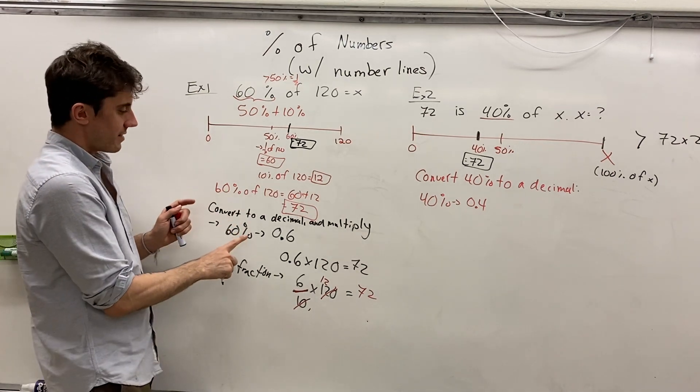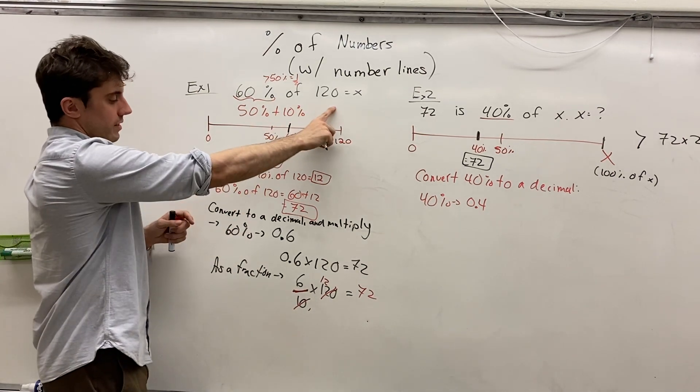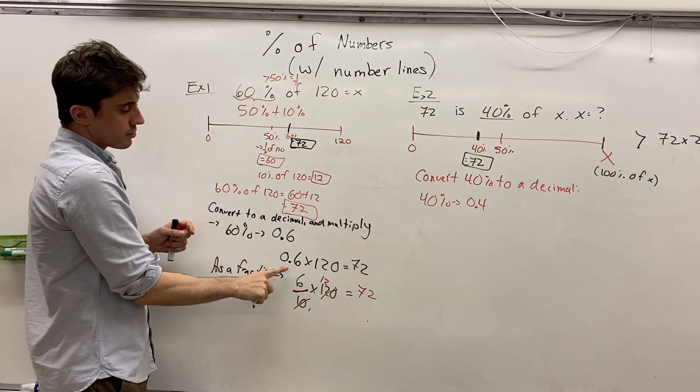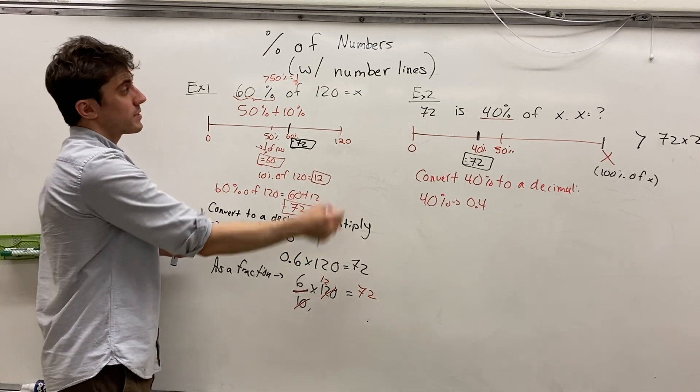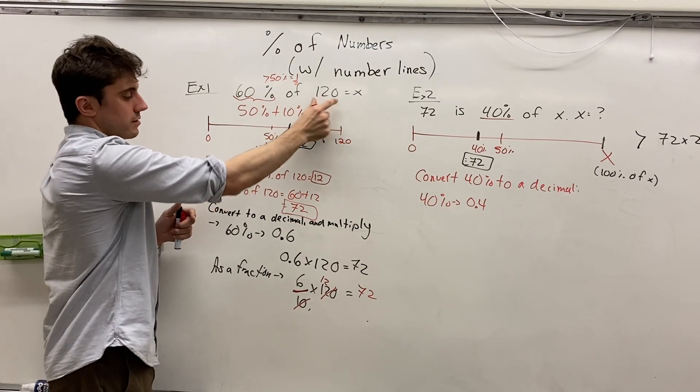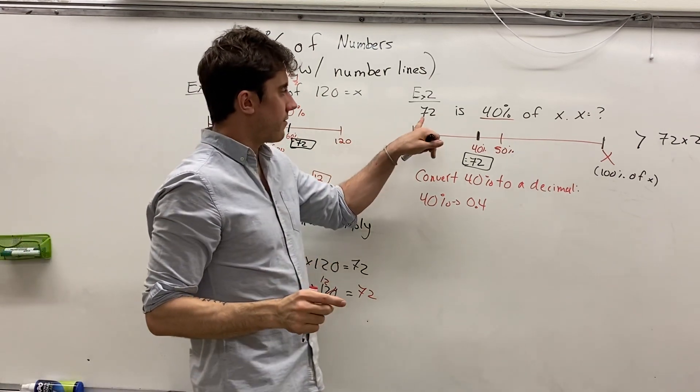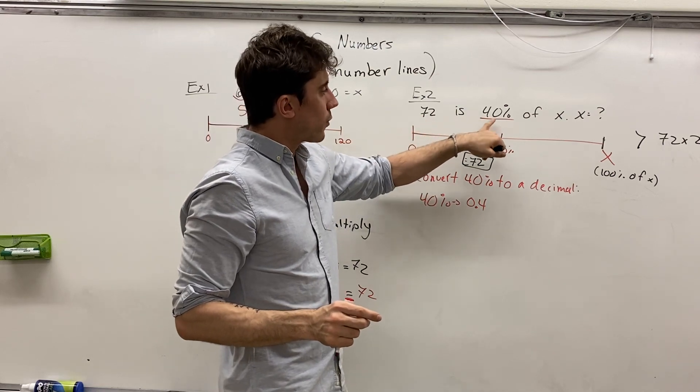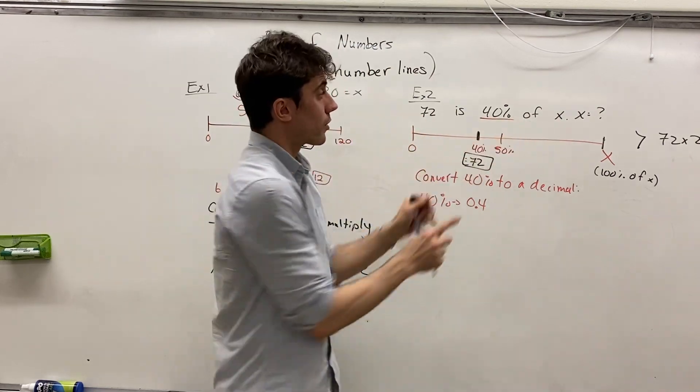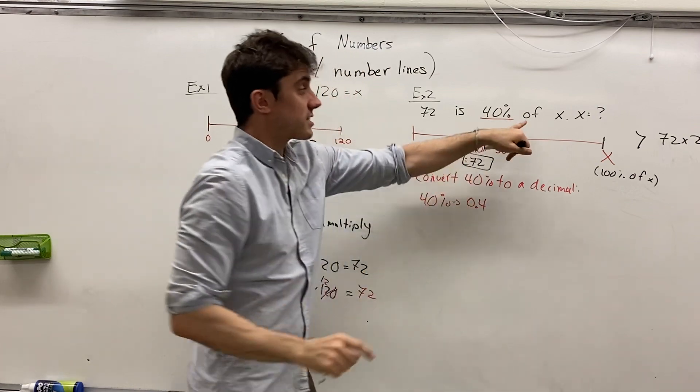Now paying attention to the language. When we have 60% of 120, we multiply 0.6 by 120. Because we have 60% of 120. Of signaled us to multiply. Here we have 72 is 40% of x. Again, the word of signals us to multiply.